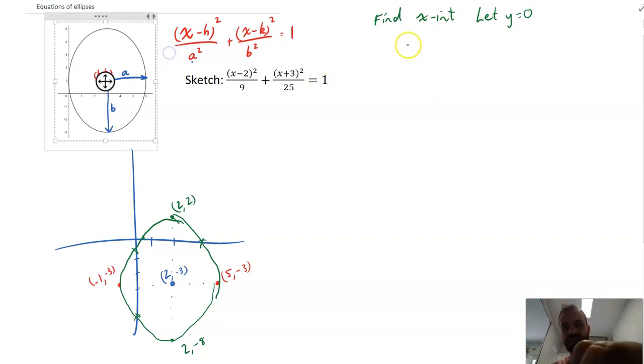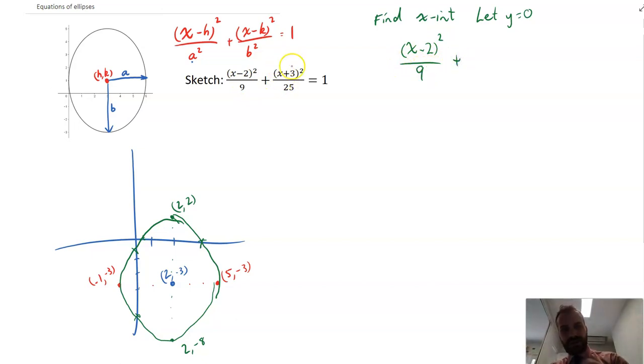And I'm going to find my x-intercept by letting y equal 0. So if I let y equal 0, I'll get x minus 2 squared over 9 plus 0 plus 3 squared over 25 equals 1. So now I just sort of set to work here. x minus 2 squared over 9 plus 3 squared, which is 9, so 9 over 25 equals 1. Oh man, I picked some ugly numbers here. So my next step here is to take this 9 over 25 and just shift it over here as 1 minus 9 over 25. 1 minus 9 over 25, that's going to be like 16 over 25.